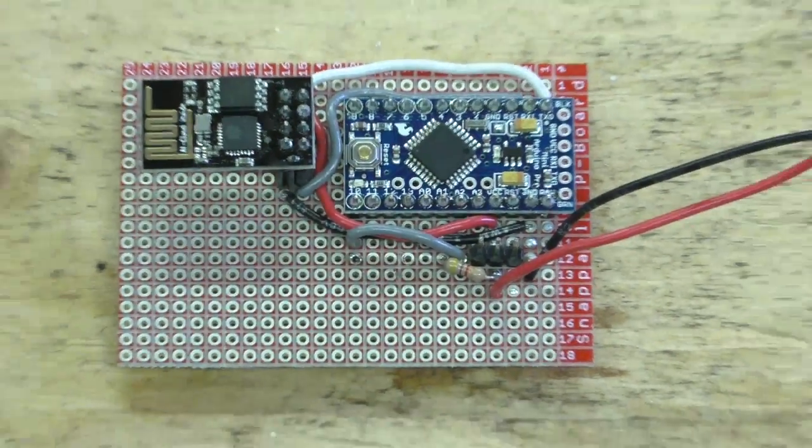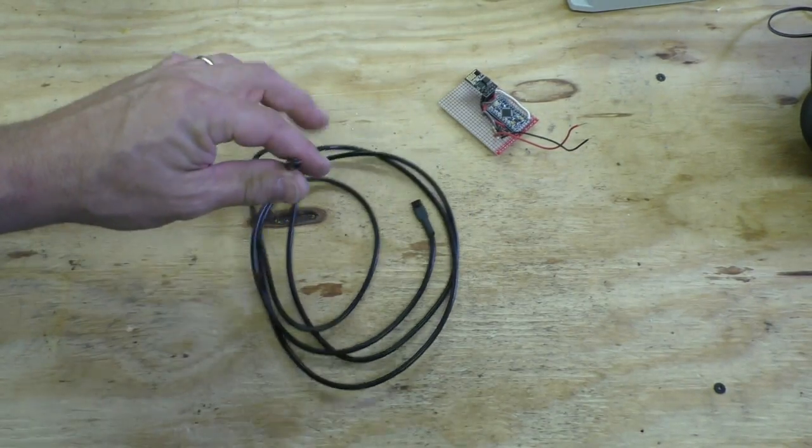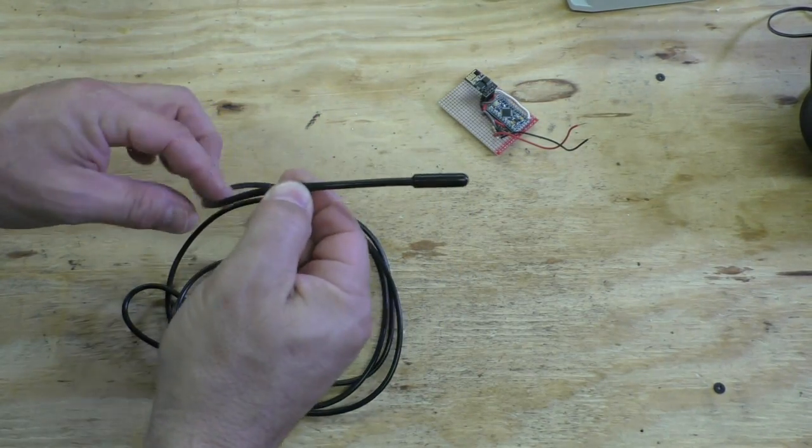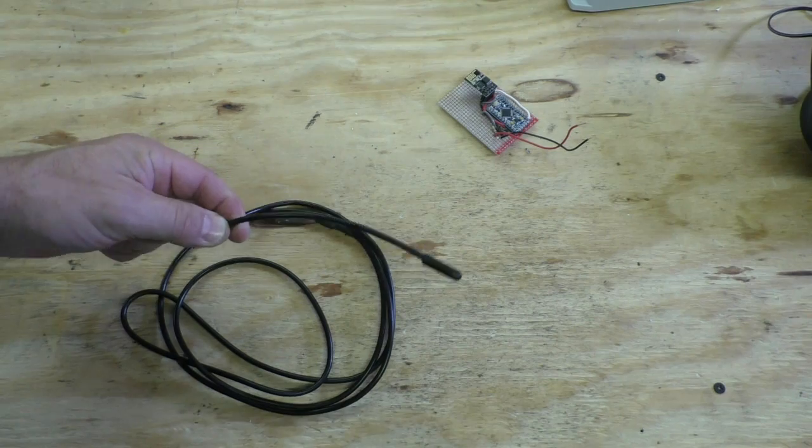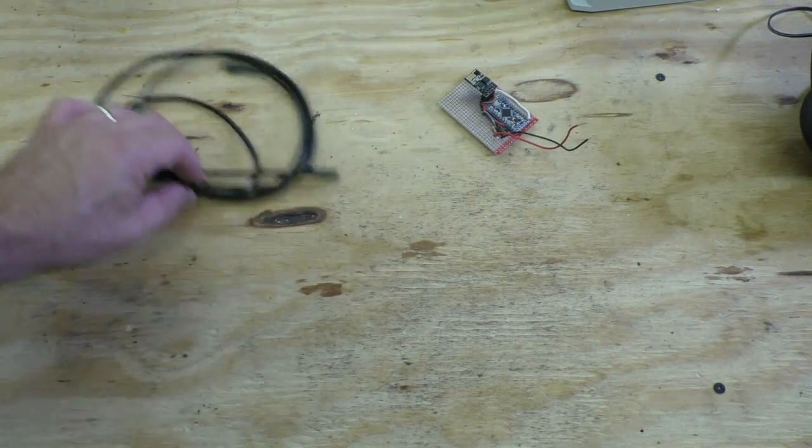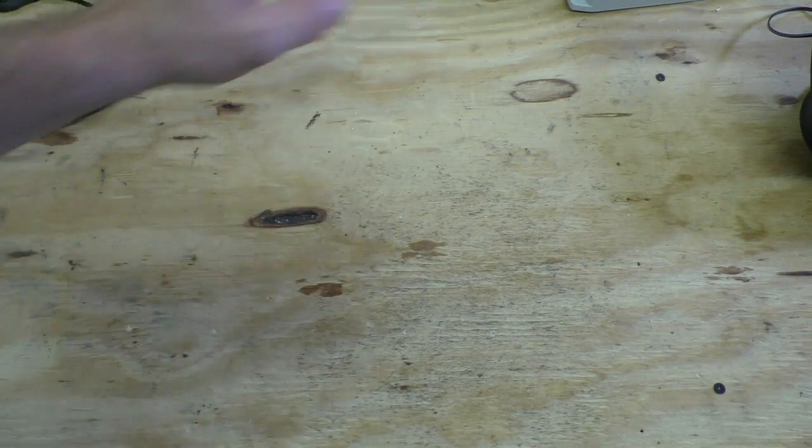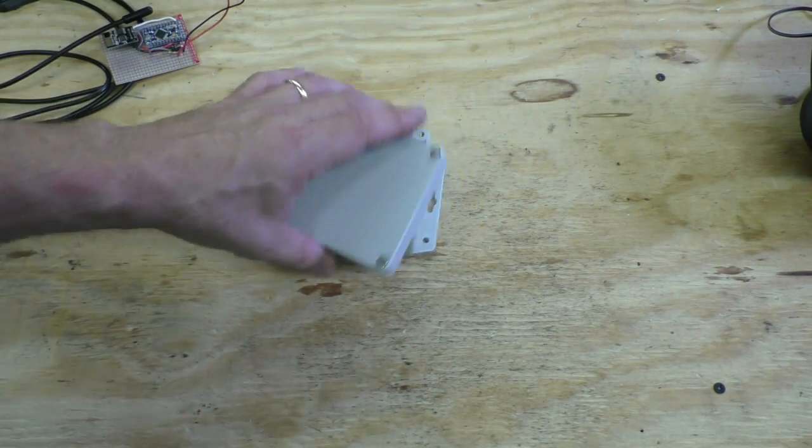What I'm going to use is that circuit board, I've got a temperature probe here and this is waterproof, it's made for reading water temperatures. I'm going to hook these two together and enclose it in this box.